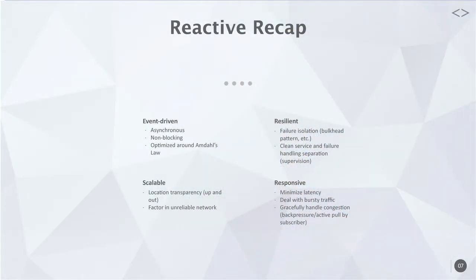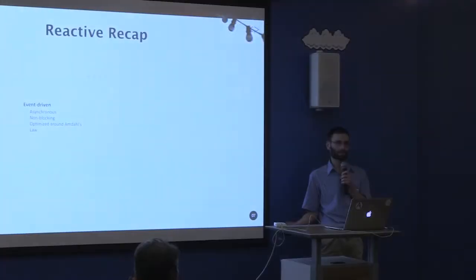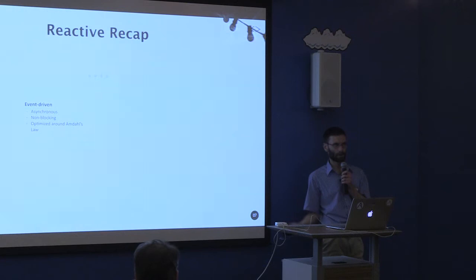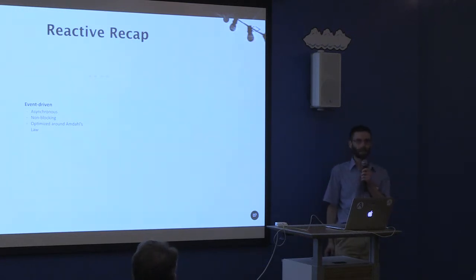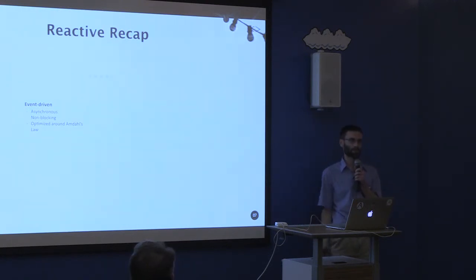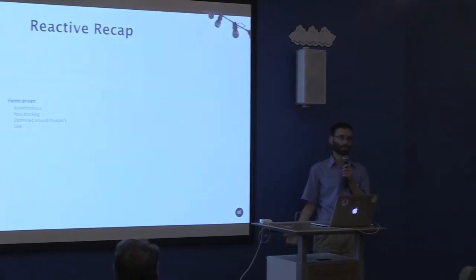Event-driven is essentially asynchronous, non-blocking, and it basically optimizes your application around Amdahl's law, because Amdahl's law says that your application will be at least as slow as the part that has to be serially executed. The rest can be parallelized. And if you have blocking calls or synchronous calls, you're wasting a lot of computing power. You cannot really distribute the serial part of your code, but you can at least utilize your hardware better while otherwise your code would be blocking.